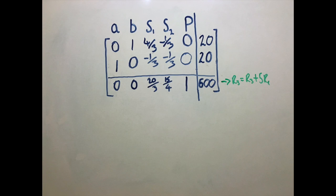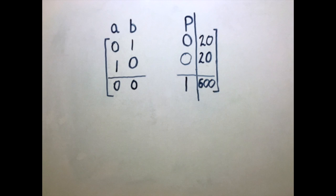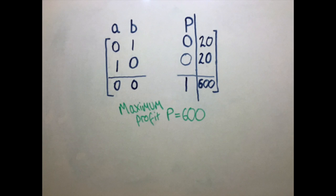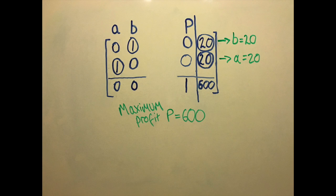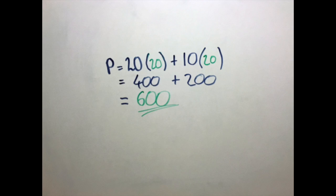There are no longer any negative entries in the final row, and this tells us we've reached our optimal solution. We can disregard the basic variables. The maximized objective function is the constant in the final row, 600. This value occurs when 1B = 20 and 1A = 20. In other words, we can maximize the profit by making 20 of each type of chair each week. A quick sanity check will validate this maximum.